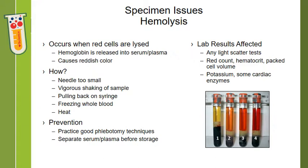How does this happen? A lot of it has to do with phlebotomy technique. If the needle being used is too small, or if the syringe plunger is pulled all the way back, the red cells shoot through the needle and lyse when they hit the syringe walls. If a sample is vigorously shaken after collection, that can also cause the red cells to lyse. We always want to educate anyone who draws blood to invert gently, not shake those tubes. Hemolysis can also occur when whole blood is frozen, or if it sits too close to a heat source. Be aware also that patients can have intravascular hemolysis, so it's not always a blood draw issue, but a lot of times it is.